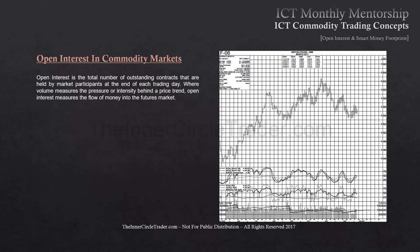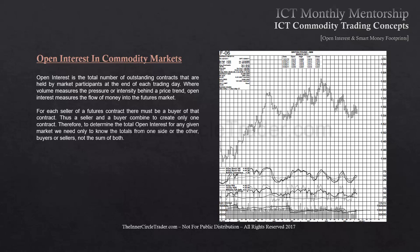We have to define what open interest is. Open interest is the total number of outstanding contracts held by market participants at the end of each trading day. Where volume measures the pressure or intensity behind a price trend, open interest measures the flow of money into a futures market. For each seller of a futures contract there must be a buyer, so a seller and a buyer combine to create only one contract. Therefore, to determine total open interest for any given market, we need only know the totals of one side — buyers or sellers — not the sum of both.